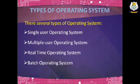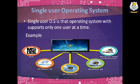Next are the types of operating system. There are several types: single user operating system, multiple user operating system, real-time operating system, and batch operating system. The single user operating system is the type of operating system that is developed and intended for use on a computer or similar machine that will only have a single user at any given time.